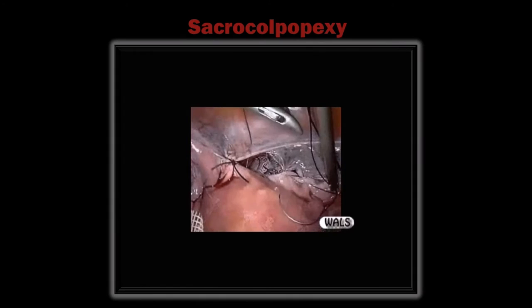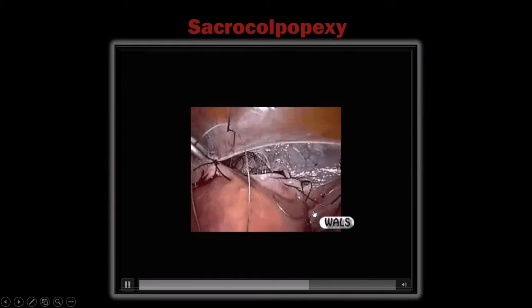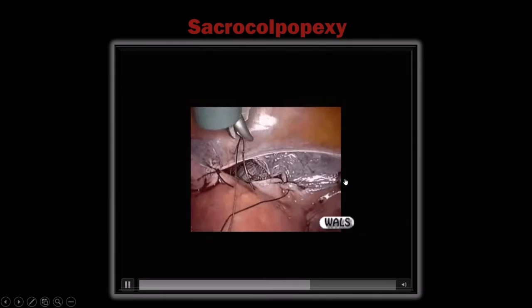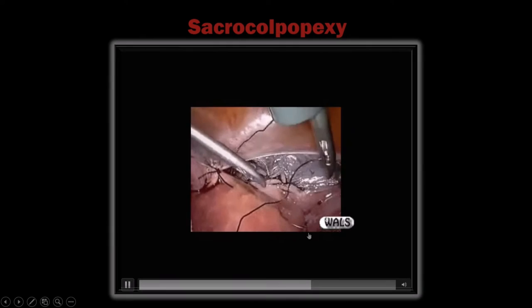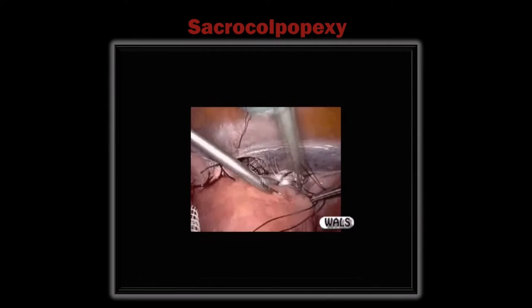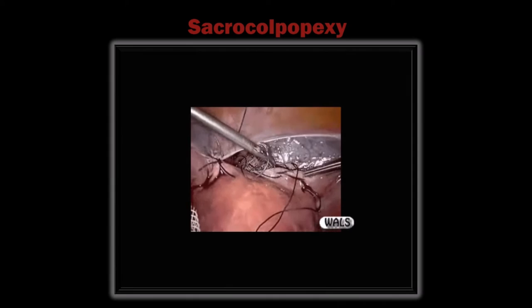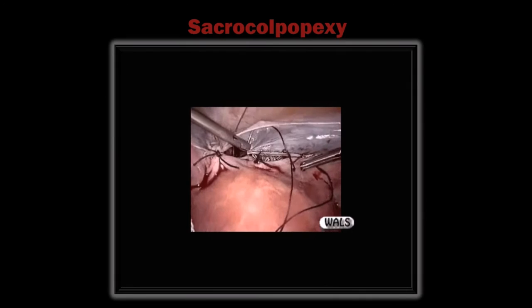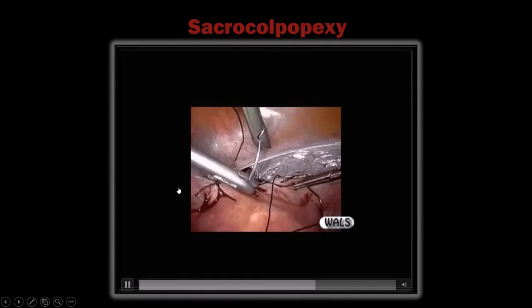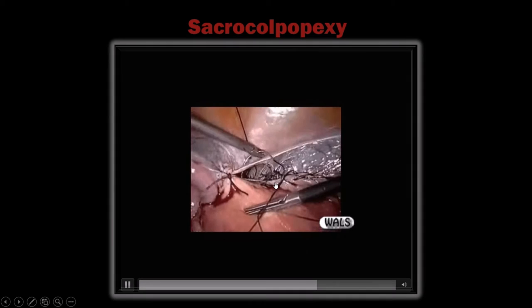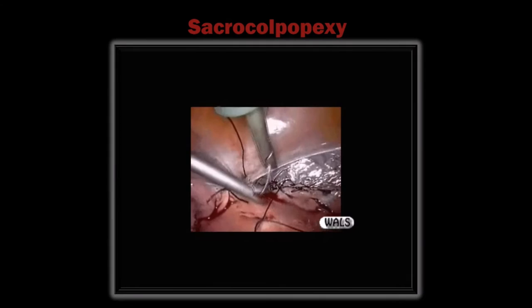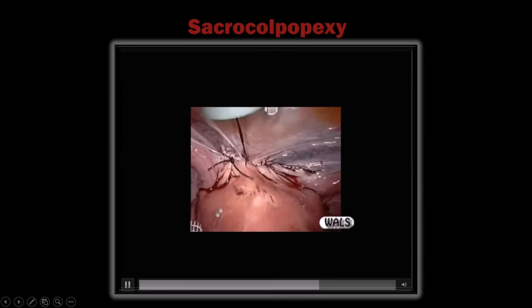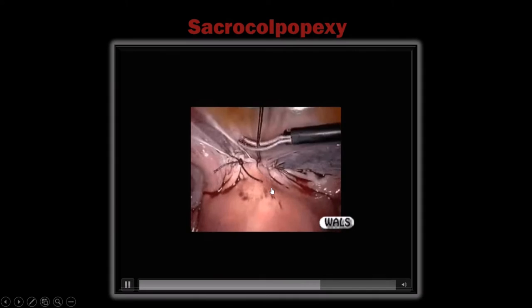The anterior peritoneum is slowly closed, with care taken not to let the suture get entangled. The entire peritoneum is closed so that no part of the mesh is visible — the mesh is completely hidden inside the peritoneum. The entire peritoneum of the anterior cul-de-sac is now closed.